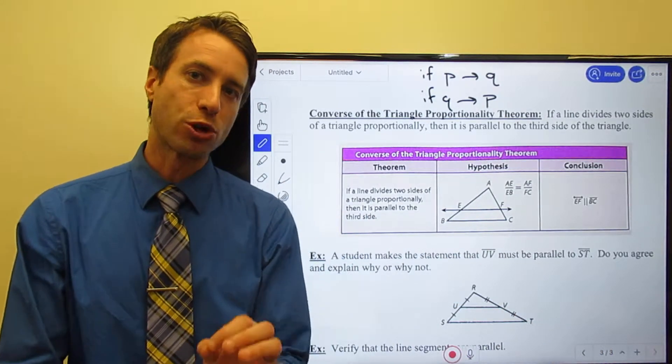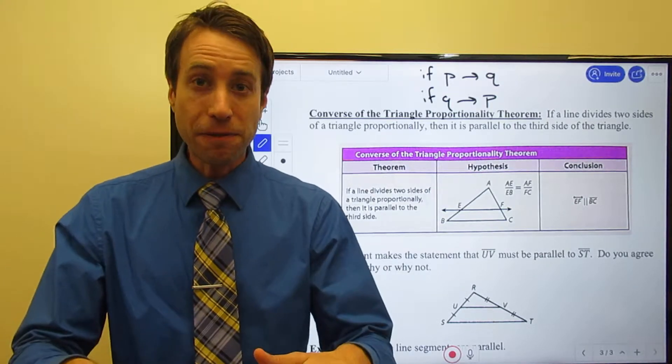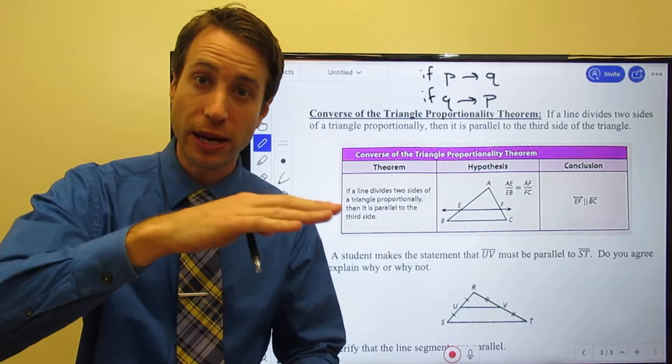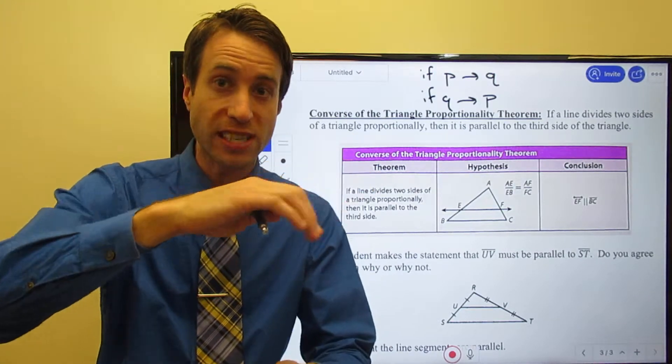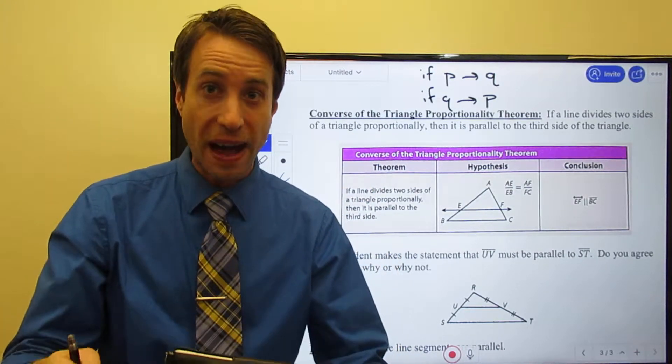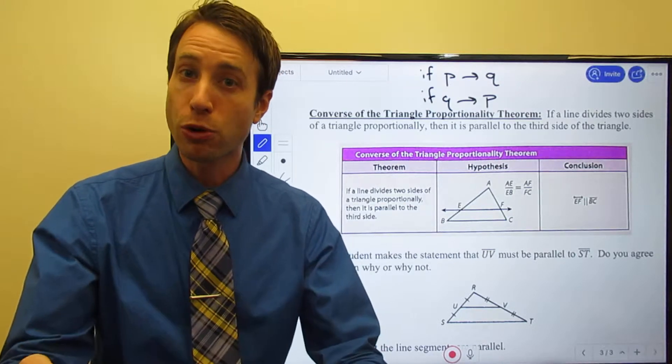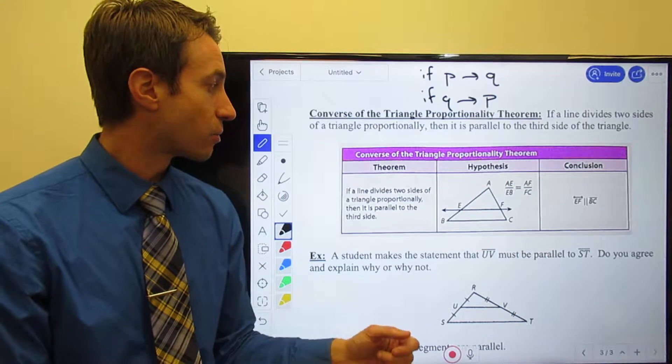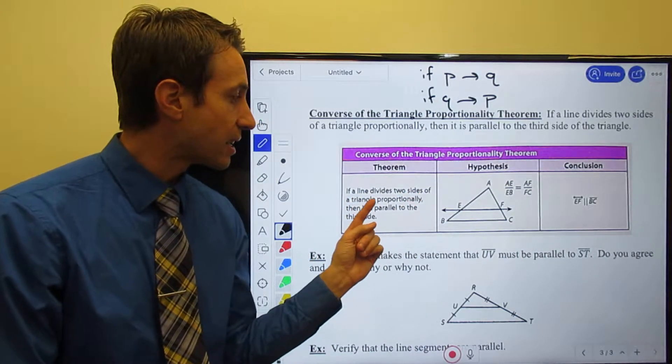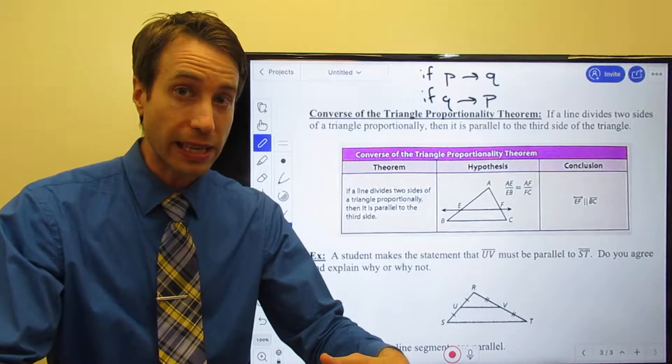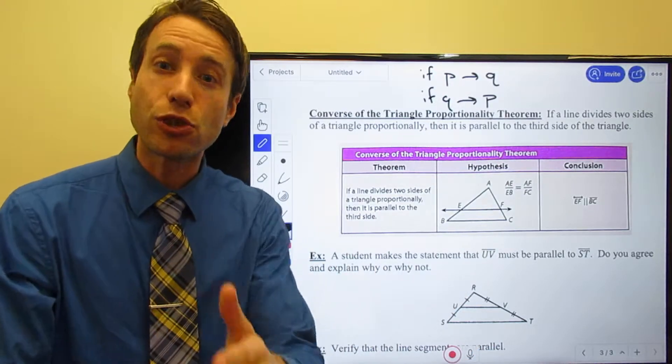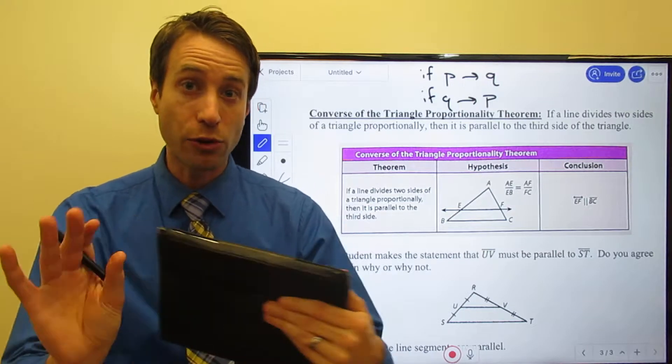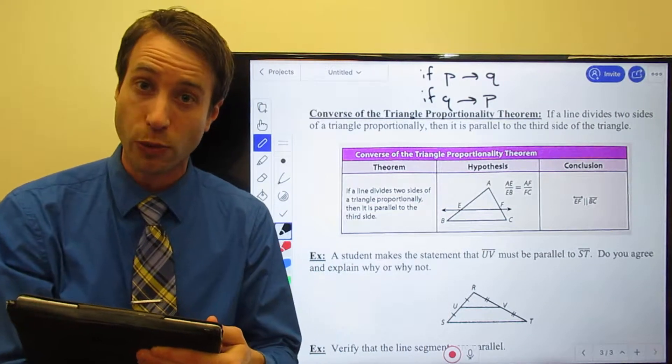The triangle proportionality theorem was this. If two lines, if I have a parallel line running through a triangle, it's parallel to the third side, then it will divide the triangle proportionally. The converse of that is this: if a line divides the sides of a triangle proportionally, then the two lines have to be parallel. Do you see how the hypothesis and the conclusion has switched places?